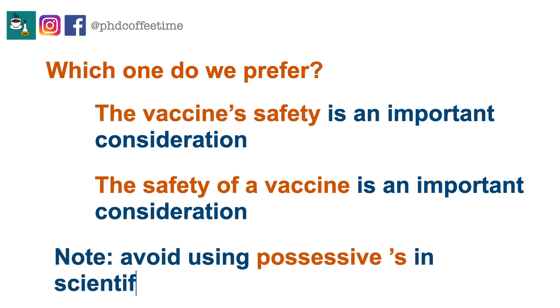In scientific writing, you do not want to use the possessive apostrophe-s. This is mostly for informal use. When writing a scientific article, you should always try to restructure your sentence to avoid using the possessive s. There is always a way to rephrase your sentence structure. In academic writing, we try to avoid both numbers at the start of a sentence and the possessive apostrophe-s.